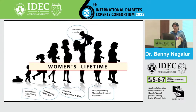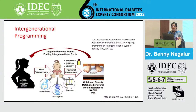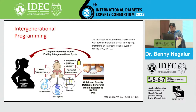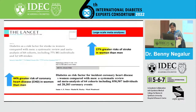It all starts in intra-uterine life. A woman with a female fetus will have the ovum of the fetus bathed in a hyperglycemic environment, and when that female offspring grows up, she will develop NCDs — obesity, diabetes, cardiovascular risk, and other metabolic complications. This is known as the intergenerational cycling of obesity, CVD, and NAFLD.